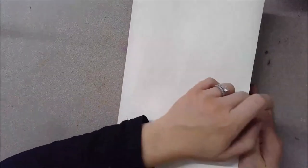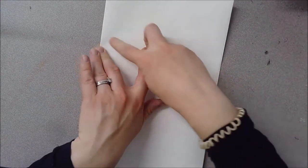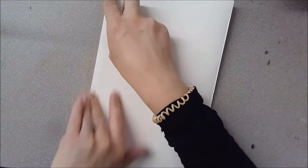Alright, let's get started. First of all, you want to make sure that your piece of paper is folded in half perfectly. So you want to make sure you've lined up the edges and that you've really made a good crease on it.